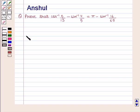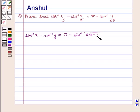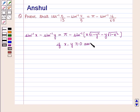We know that sin⁻¹(x) minus sin⁻¹(y) is equal to π minus sin⁻¹(x·√(1 − y²) − y·√(1 − x²)), if both x and y are greater than or equal to 0 and x² + y² is greater than 1.